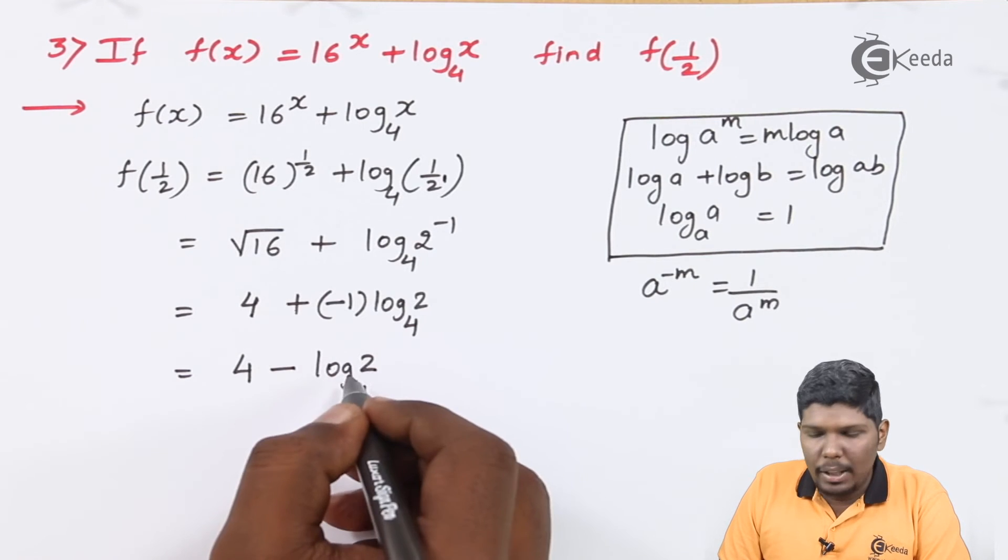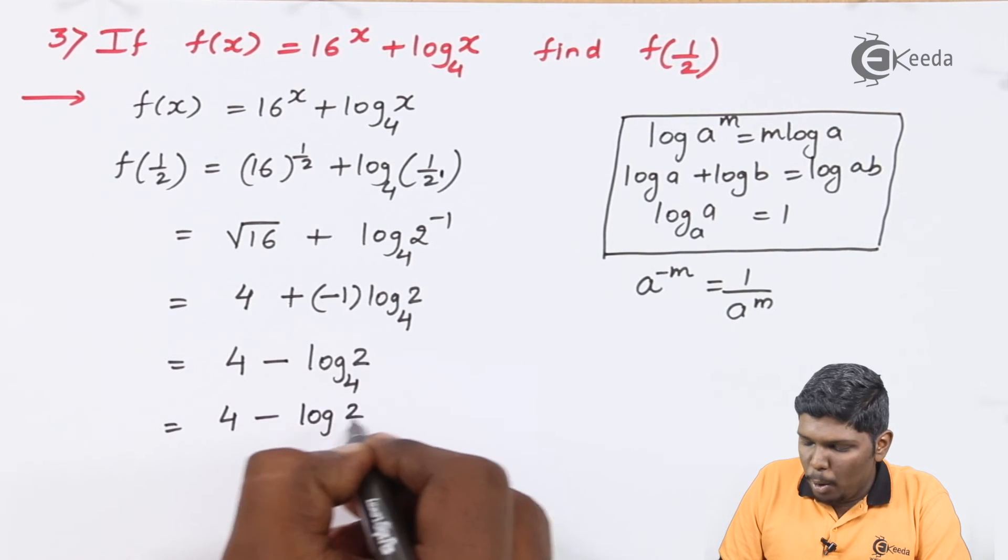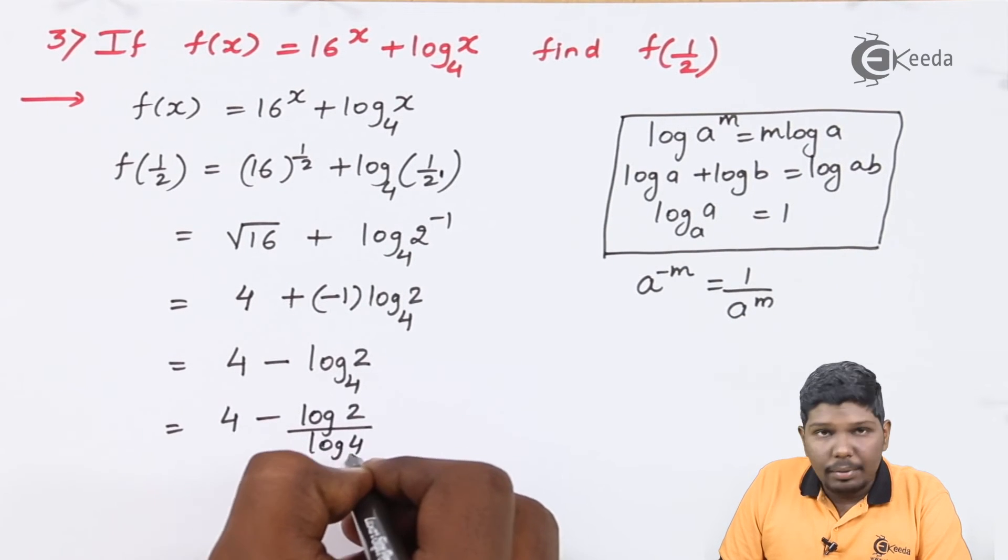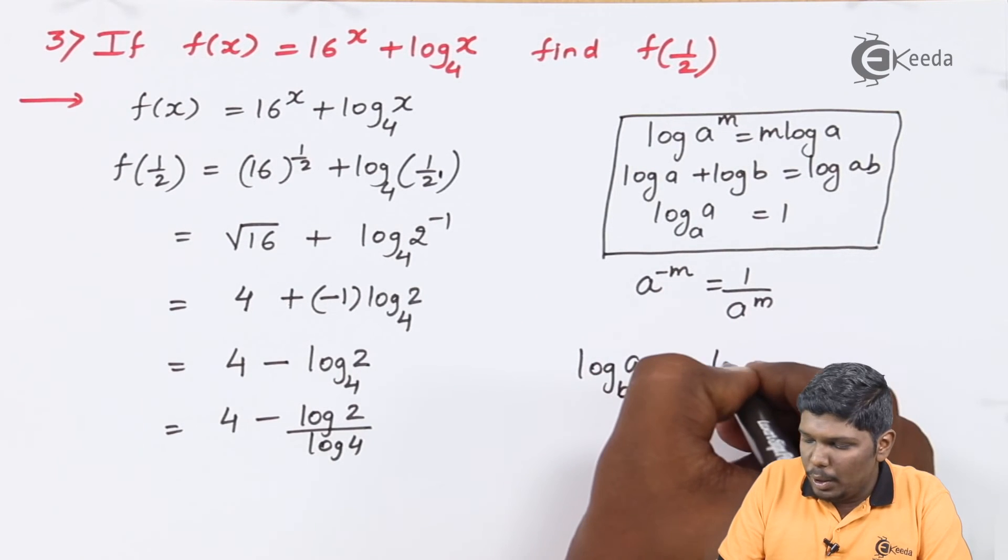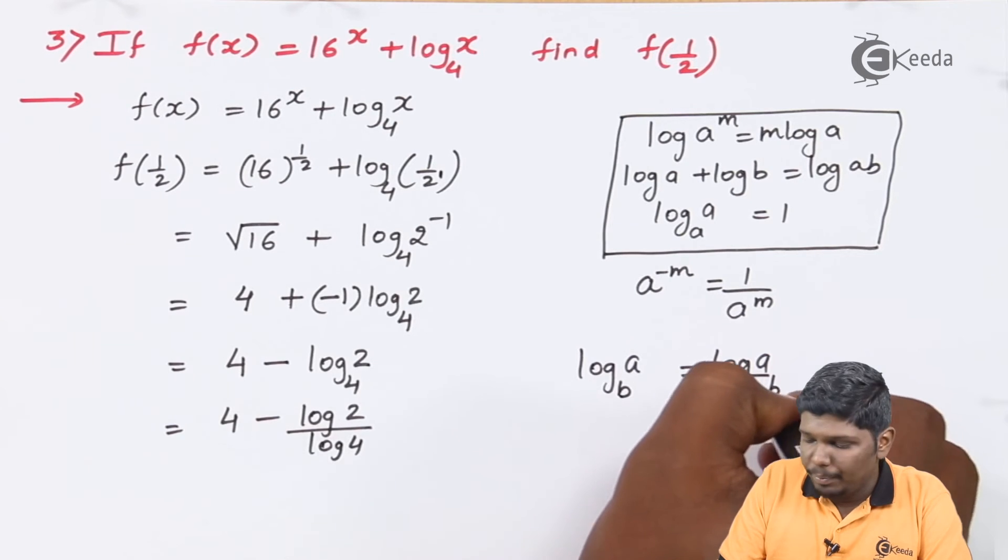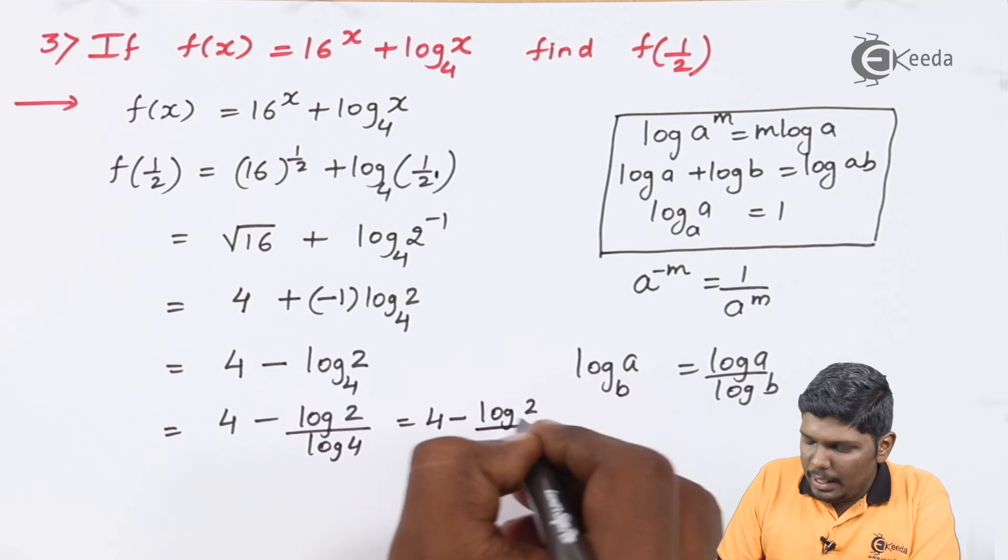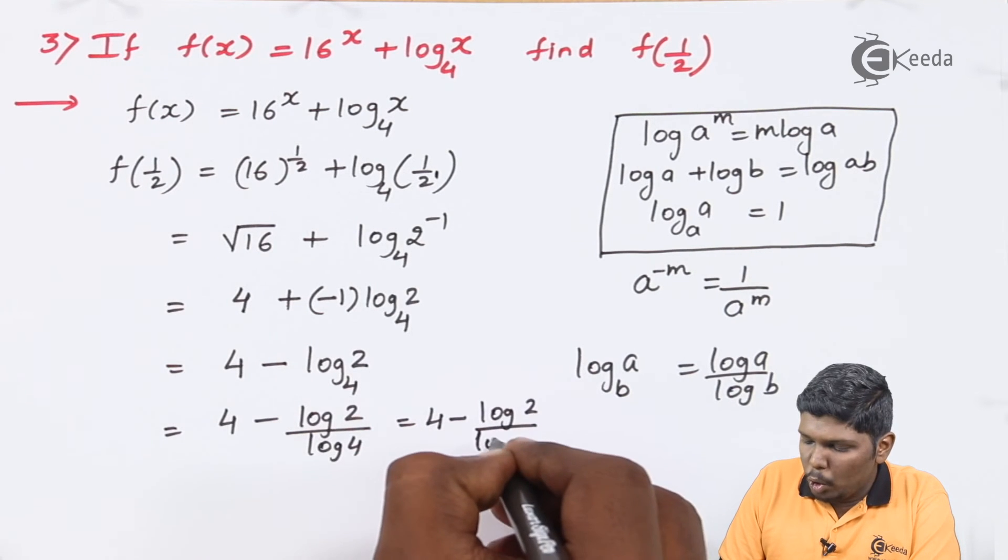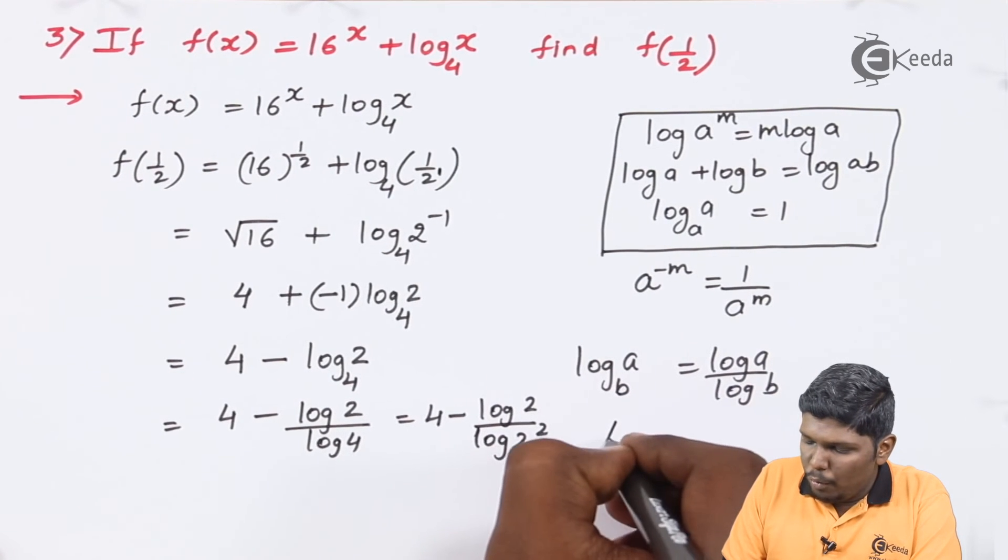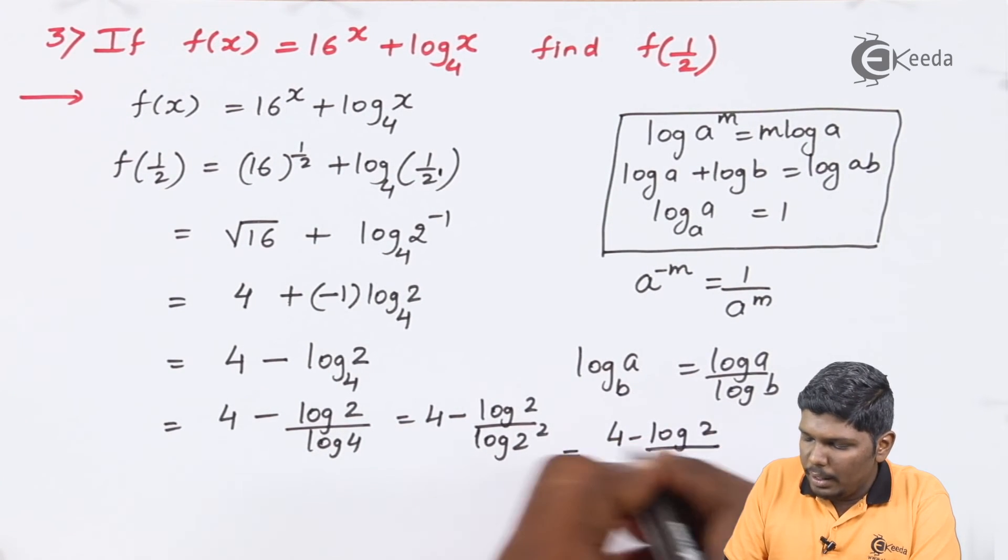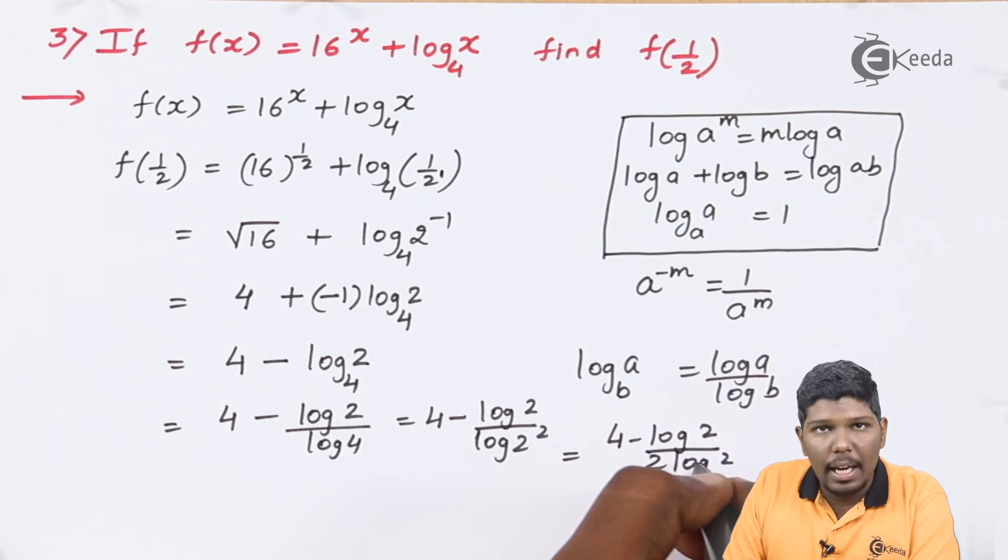Now to solve the value of log 2 to the base 4, we can use one more formula: log 2 upon log 4. The formula is log a to the base b equals log a upon log b. So 4 minus log 2 upon log 4. This can be written as log 2 squared because 2 squared is 4. So 4 minus log 2 upon 2 log 2. Again, log a raised to m is m log a.